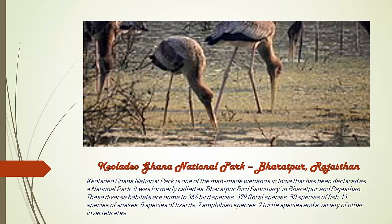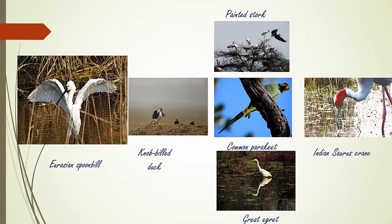Keoladeo Ghana National Park is one of the man-made wetlands in India and was formerly called Bharatpur Bird Sanctuary. It is located in Bharatpur, Rajasthan. Examples of birds found here include Eurasian Spoonbill, Knob-billed Duck, Painted Stork, Common Parakeet, Great Egret, and Indian Sarus Crane.